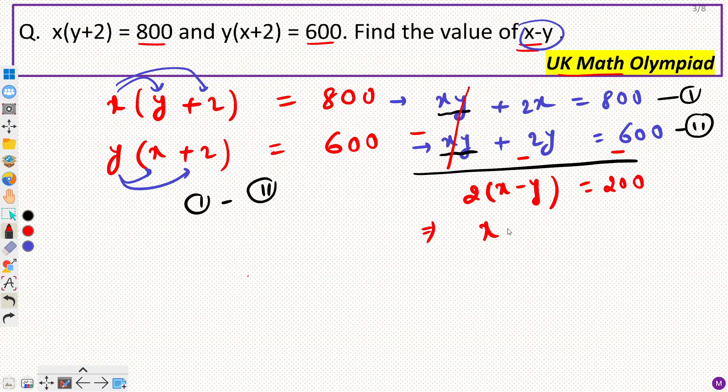So from here we will get x minus y equal to 200 by 2, that will be equal to 100. So this is our answer.